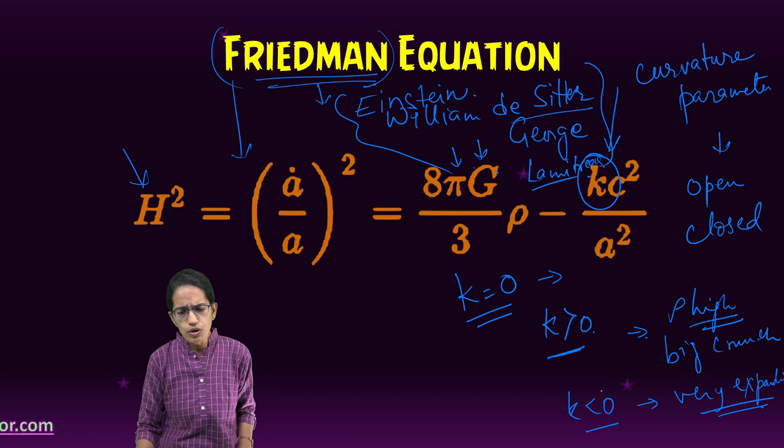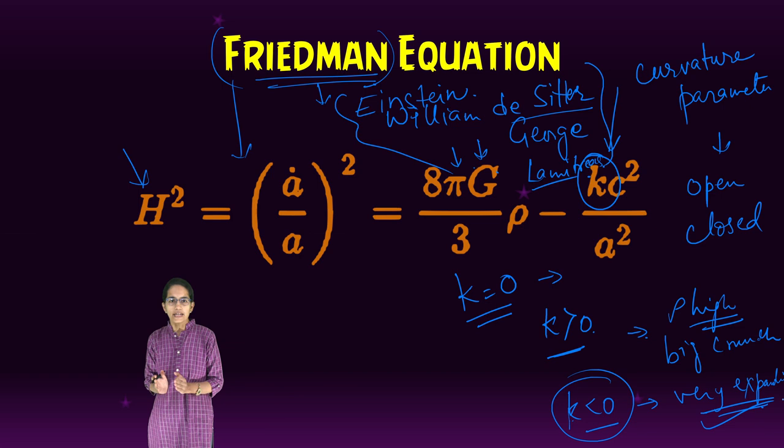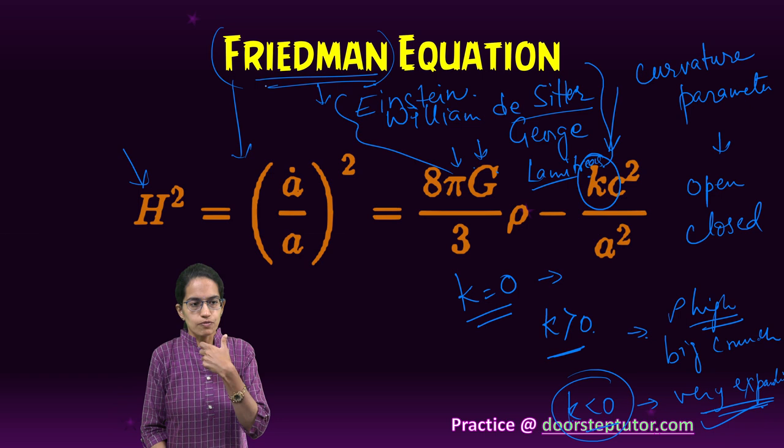However, the concept of K less than zero indicates an expanding universe. So, this idea of Friedman equation actually brings the theme that commonly when you pronounce, it is heard as Freeman.